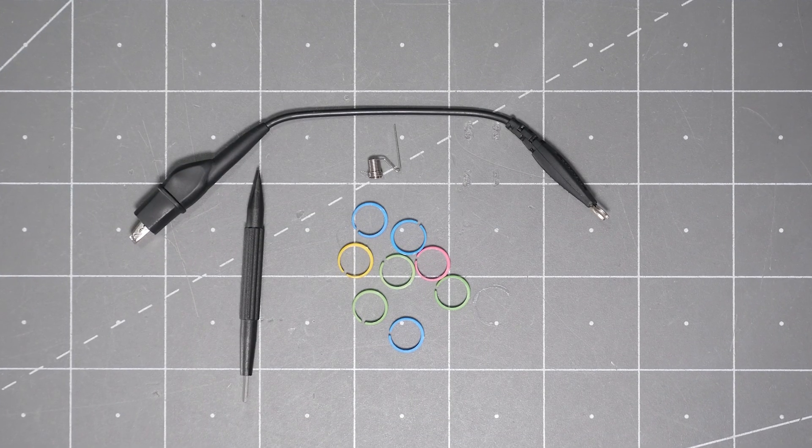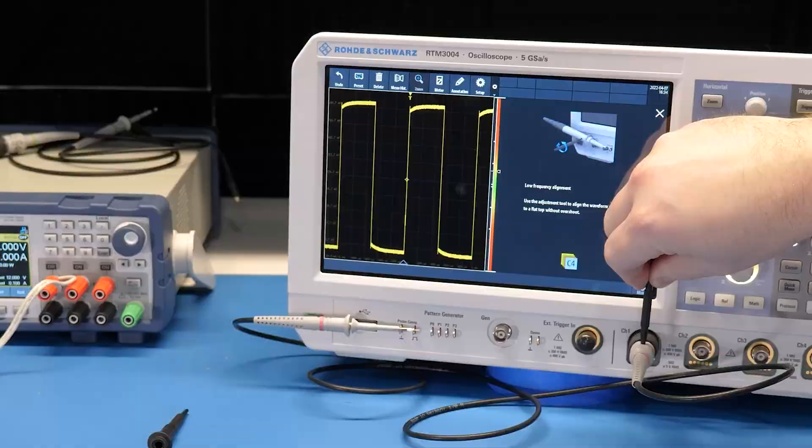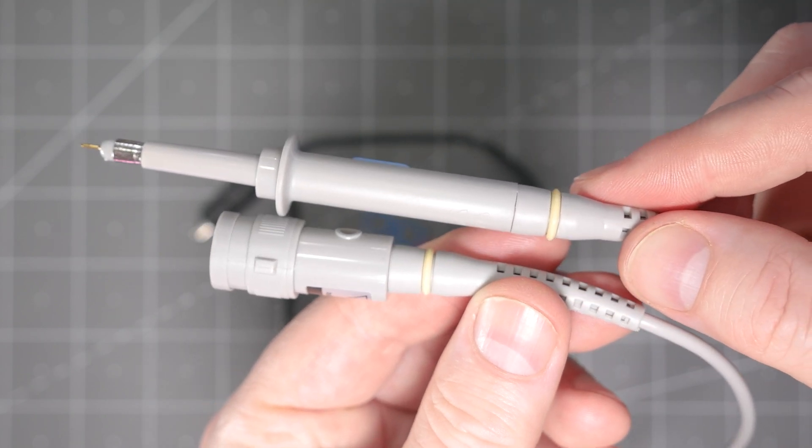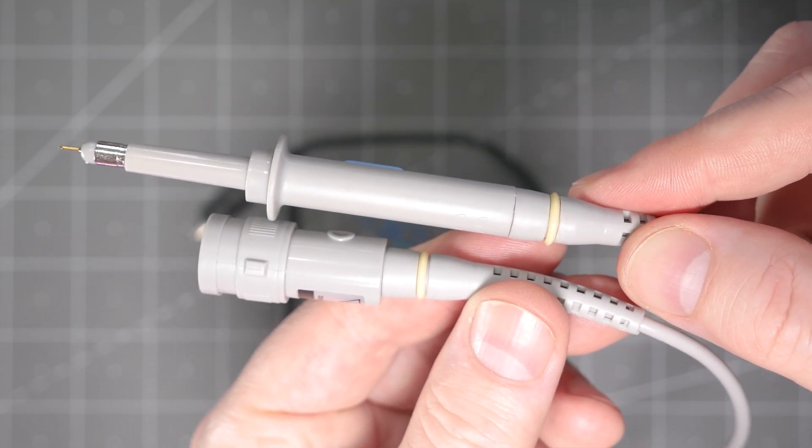Here are some common accessories that come with most oscilloscope passive probes. The plastic screwdriver tool adjusts the trim capacitor to compensate the probe's response. Another accessory are these color bands which help to match up the probe's tip with the BNC side.